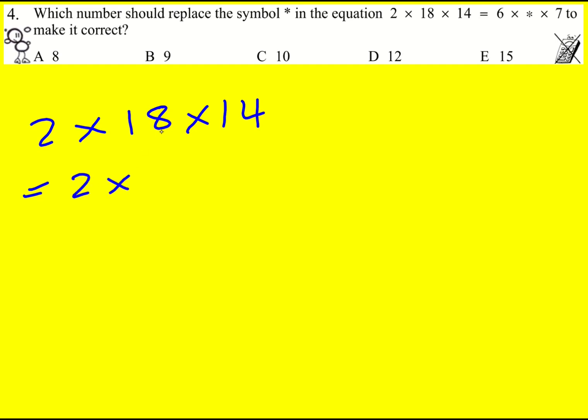Well, I'm going to take the 18 and split it into 6 times 3 because then I've got that 6 part. And I'm going to take the 14 and write it as 2 times 7. So now I've got the 7 part.